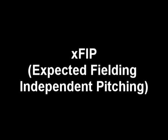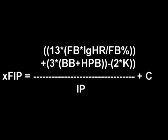XFIP, or Expected Fielding Independent Pitching, takes into account the league's fly ball and home run ratios. To calculate XFIP: 13 times fly balls times the league average of home runs divided by fly balls, plus 3 times base on balls plus hit by pitch, minus 2 times strikeouts, divided by innings pitched, plus the constant.